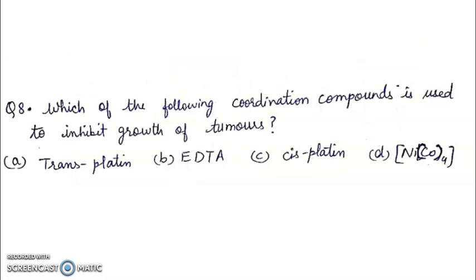Question 8. Which of the following coordination compounds is used to inhibit growth of tumors? Transplatin, EDTA, cisplatin, and Ni(CO)4. Right answer will be cisplatin.